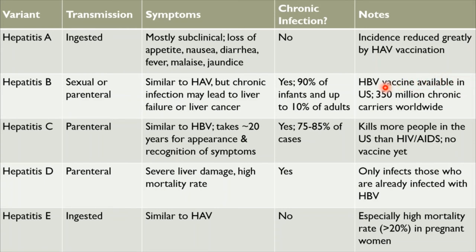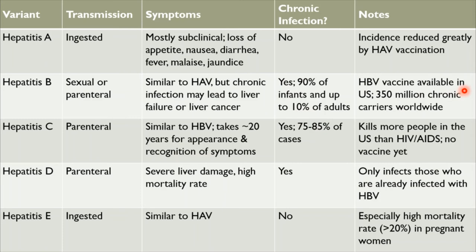Hepatitis B differs from A in several ways. It's transmitted sexually or parenterally — through breaks in the skin or mucous membranes. Symptoms are similar to Hepatitis A, but chronic infection can lead to liver failure or liver cancer. This is more likely if Hep B is acquired in infancy: 90% of infected infants develop a chronic infection, compared to only 10% of adults. Although rare in the U.S. due to vaccination, there are an estimated 350 million chronic carriers worldwide.